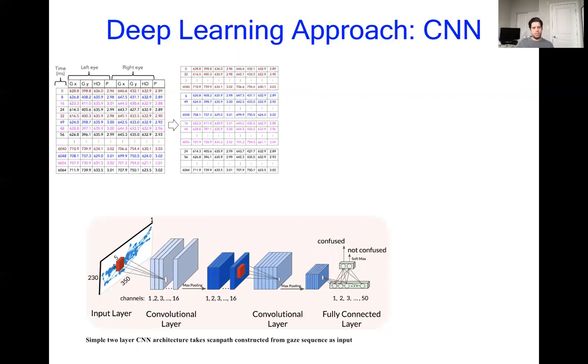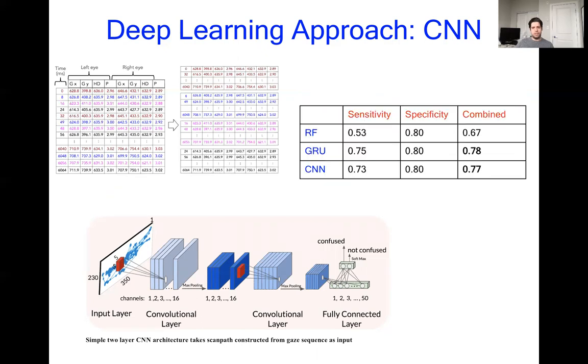The second thing we did is we use these scan paths and process them through a simple two layer CNN. What we found was that this resulted in similar increases achieved by the RNN, and both of which were significant improvements over the random forest classifier.